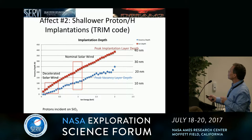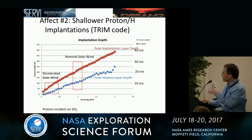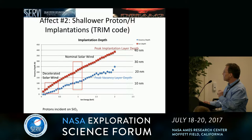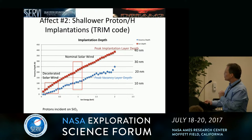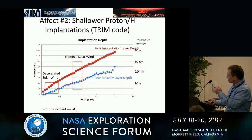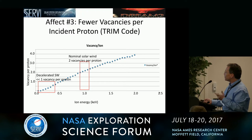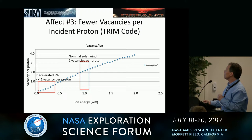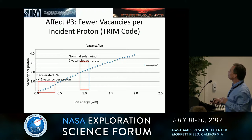A second effect is shallower proton implantations. In nominal solar wind at 1 keV, you might expect to implant at around 22 nanometers. But if you've slowed down to 200 eV, you're implanting at maybe 6 nanometers — almost a factor of three or four decrease in penetration. There's also a peak vacancy layer reduction. The vacancies tend to lie a little closer to the surface. The vacancy per ion for nominal solar wind is about two vacancies per proton, but when you decelerate down to 200 eV, it's down by a factor of 10 to about 0.2 vacancies per ion — meaning there's a lot less overall damage.